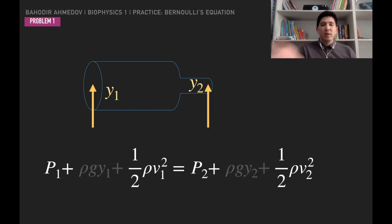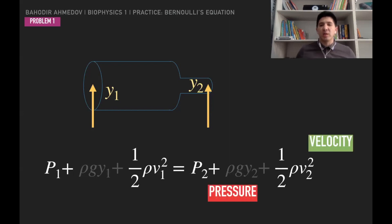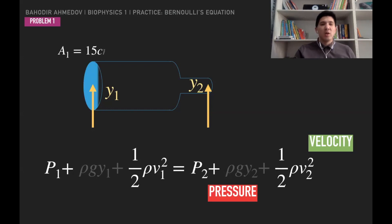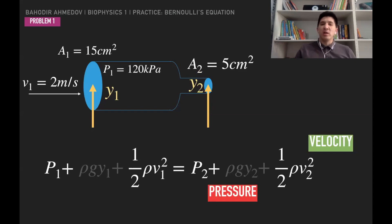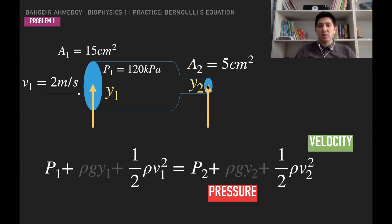Since the cross-section area is changing, the velocity is changing. We want to understand how the pressure changes as a result. We are given that the cross-section area at the first point is 15 cm², the velocity is 2 m/s, and the pressure at the first point is 120 kPa. At the second point, the cross-section area is 5 cm².